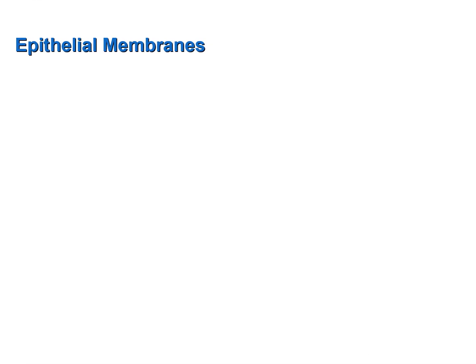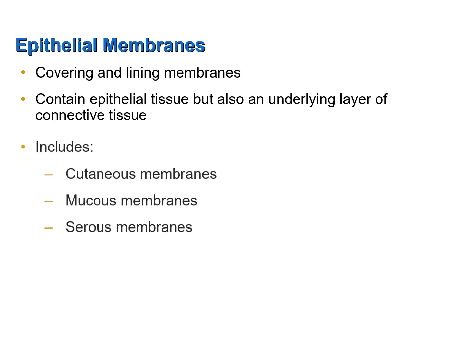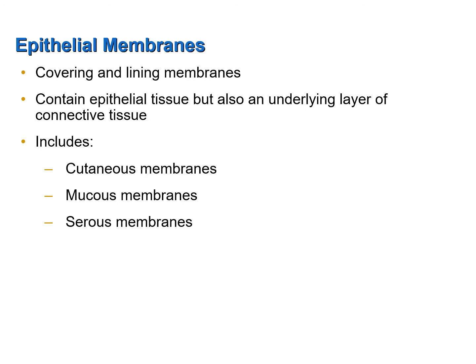Let's discuss epithelial membranes. Epithelial membranes are the membranes that cover and line — they cover the body as a whole, they cover organs, and they line cavities that open to or are closed from the external environment. Epithelial tissue covers organs and lines body cavities, and below that epithelial layer there is always some connective tissue. The two tissues together make up the epithelial membranes, which include cutaneous membranes, mucous membranes, and serous membranes.